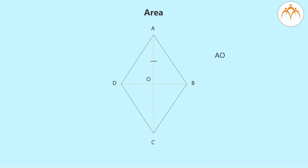AO is equal to OC. BO is equal to OD. Angles AOB, BOC, COD, and BOA are 90 degrees. Diagonal AC is d₁. Diagonal BD is d₂.